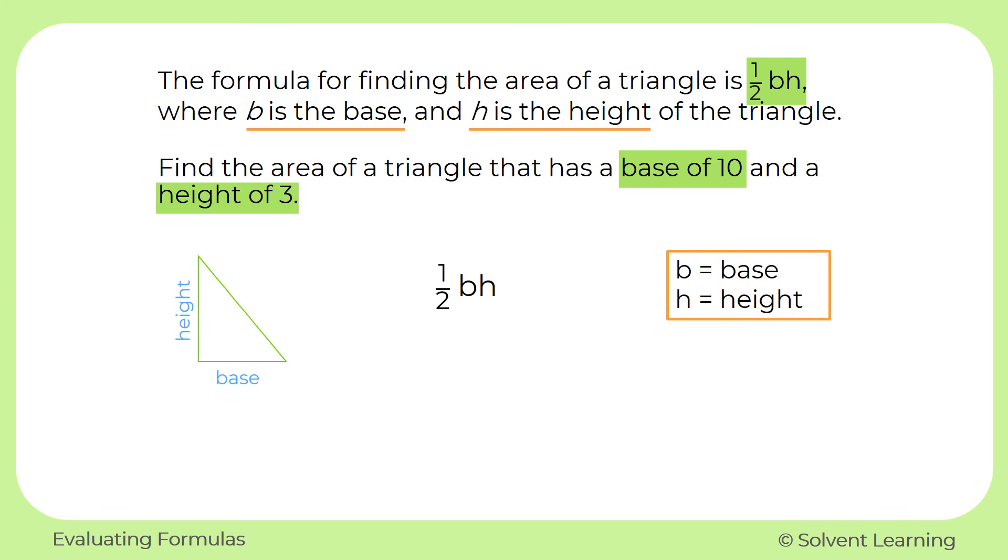We're going to put 10 in for B for the base, and 3 will get substituted for the H for the height. And it will look like this. So now instead of one half times B times H, we have one half times 10 times 3.